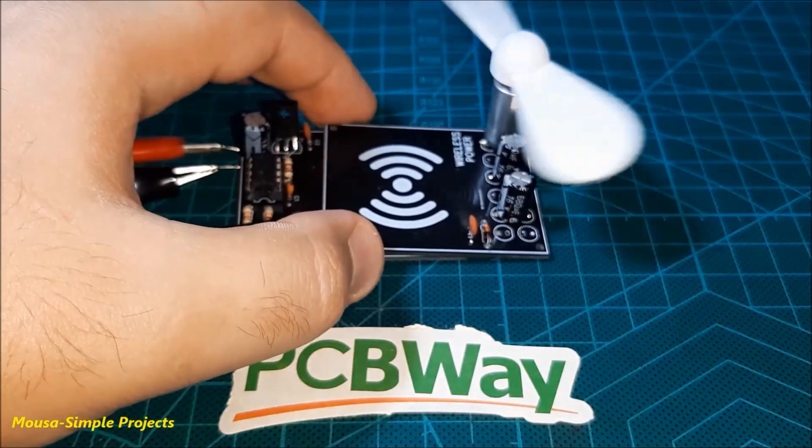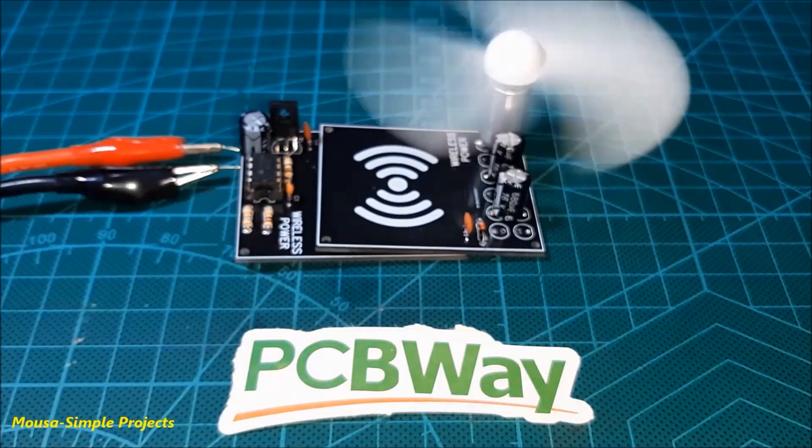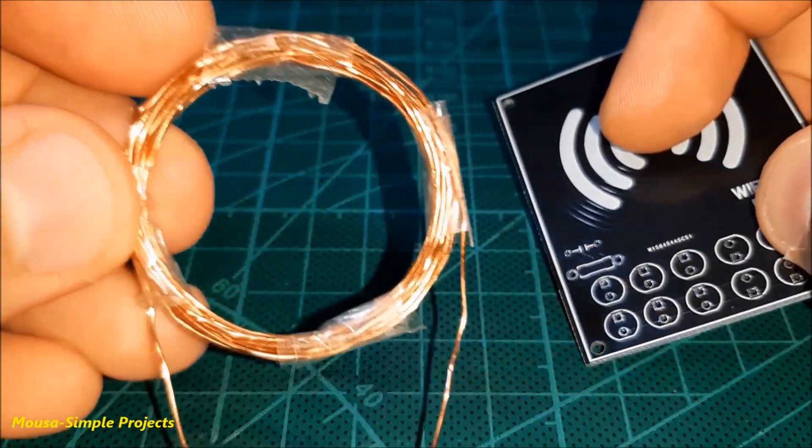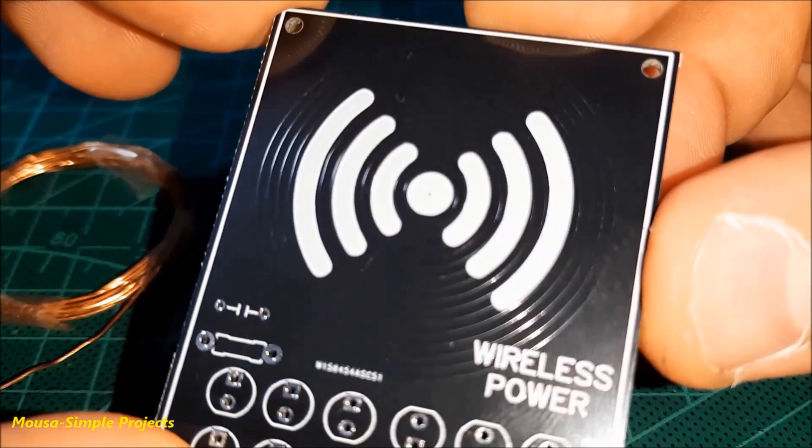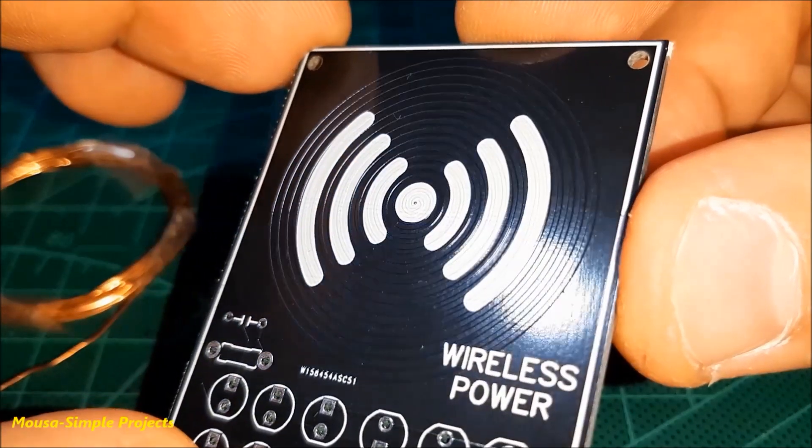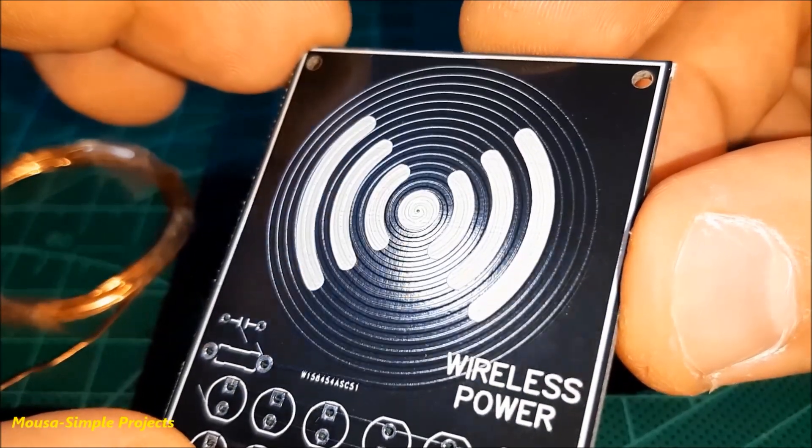In this video, I want to show you how to make a wireless power transmitter without using any wire coil, but by using the copper traces on the PCB as a transmitting and receiving coil.